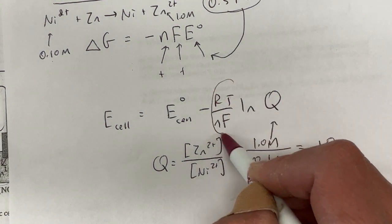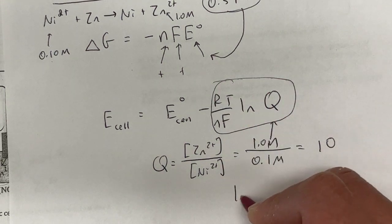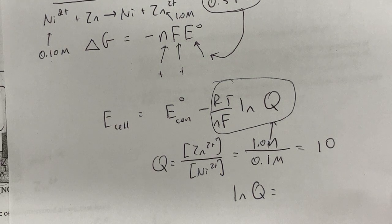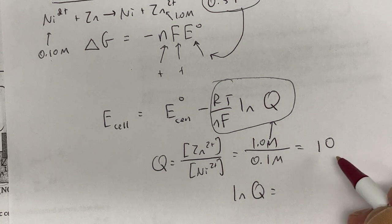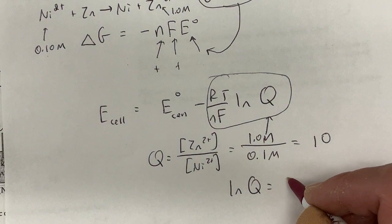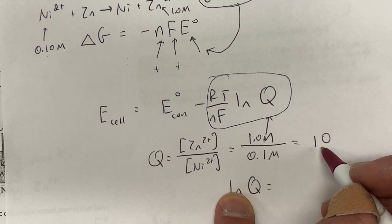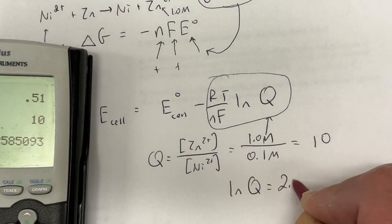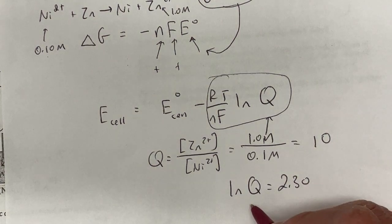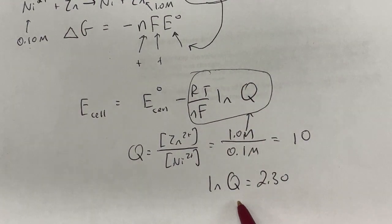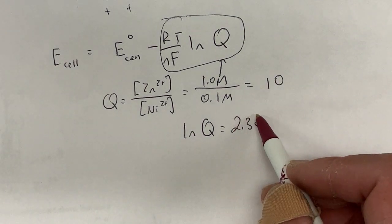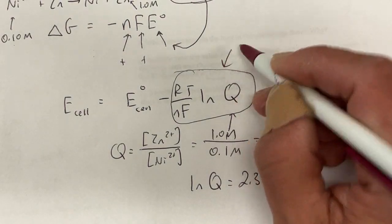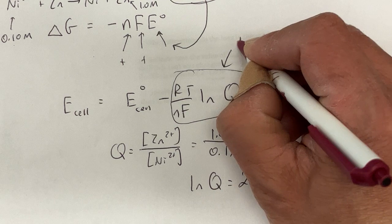Well what does that do to this factor right here? So ln of Q, even if you don't have a calculator with you—if your calculator broke somehow, hopefully that doesn't happen on the AP test—but if you calculate it, ln of Q is 2.3. But if ln is greater than 1, that means ln of Q is going to be bigger than 0. So ln of Q ends up being 2.30. Remember ln of 1 is 0, and anything bigger than that is going to be bigger than 0.